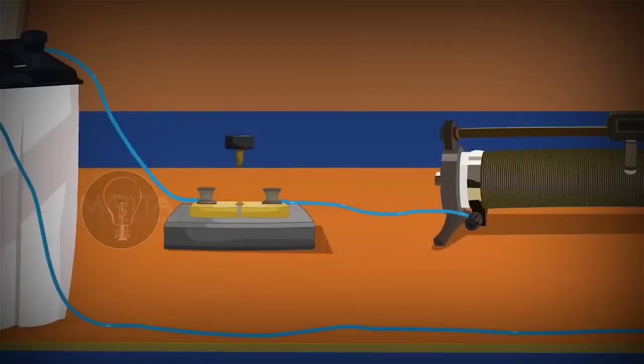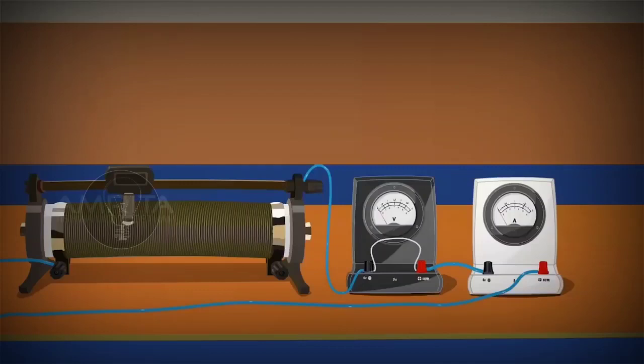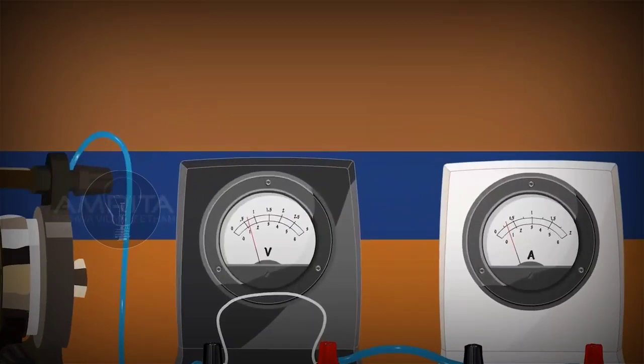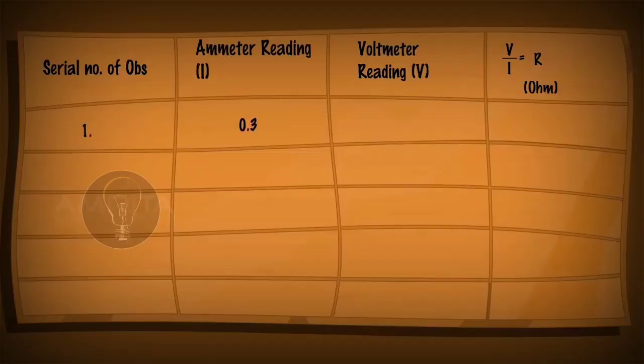Now insert the key and slide the rheostat contact to check the working of the ammeter and voltmeter. Adjust the sliding contact of the rheostat and note down the value of potential difference V from voltmeter and current I from the ammeter. Record the reading of the voltmeter and ammeter.